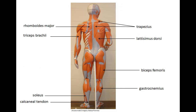Rhomboids major — adducts the scapula, squaring of the shoulders. Triceps brachii — extends the elbow joint. Soleus — plantar flexes the foot. Gastrocnemius — also plantar flexes the foot. The calcaneal tendon attaches the gastrocnemius and the soleus to the calcaneus bone. Trapezius — elevates the shoulders and extends the head to look up. Latissimus dorsi — adducts the humerus toward the back. Biceps femoris — flexes the knee joint.